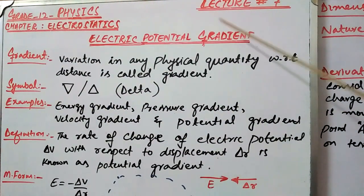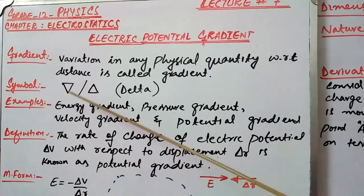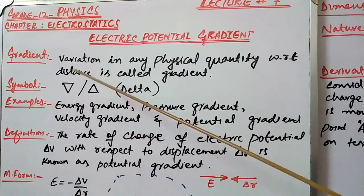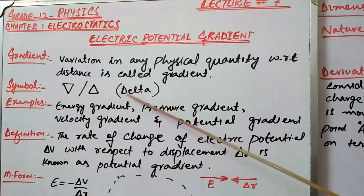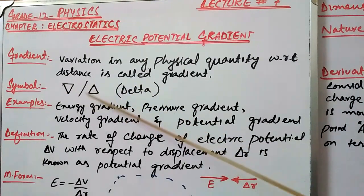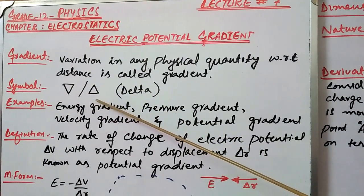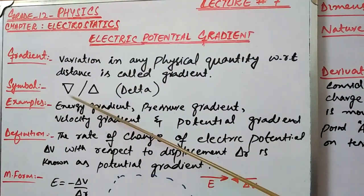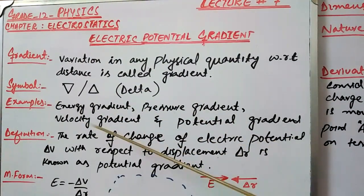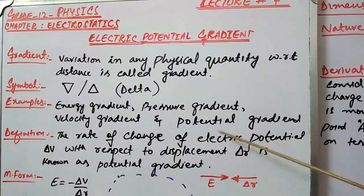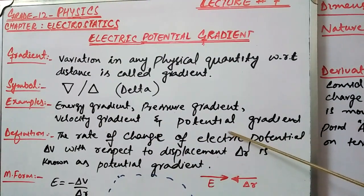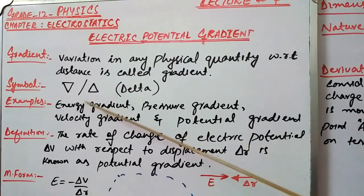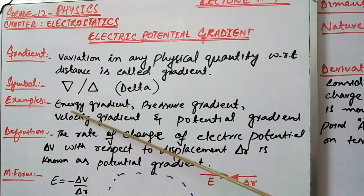Symbolically, gradient is represented by two symbols and we can use the term delta for both. Examples of gradient include energy gradient, pressure gradient, velocity gradient, and potential gradient. Energy gradient means changes in energy with respect to distance.